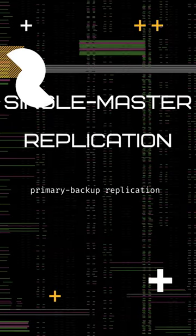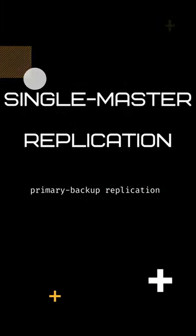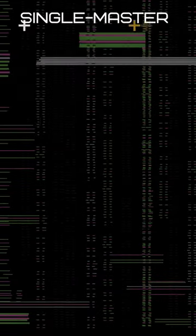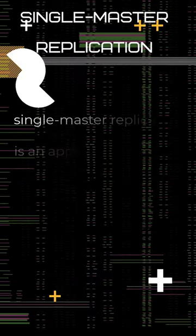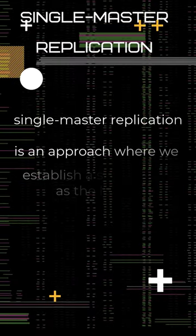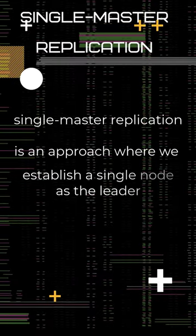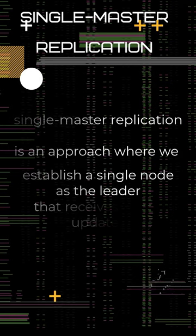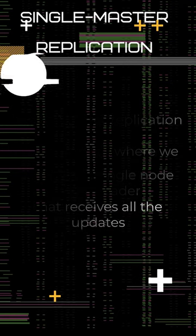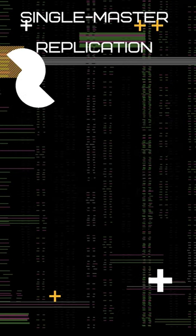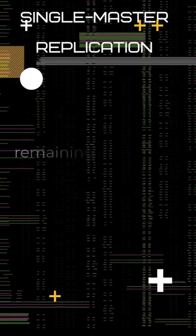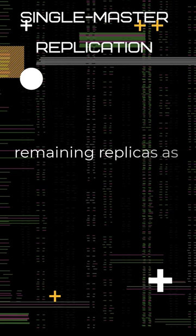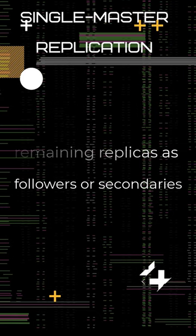Single Master Replication, or Primary Backup Replication, is an approach where we establish a single node amongst replicas as the leader or primary that receives all the updates. The remaining replicas are called followers or secondaries.